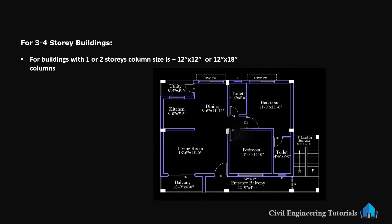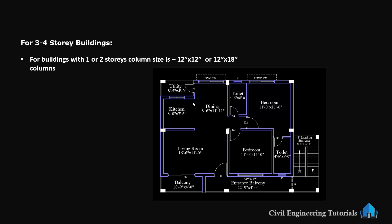You can see this is a 3 storey building plan. Let's consider a 4 storey building — the load of each floor will be transferred down to the columns, so we need columns that can handle much more weight. A 12 inch by 12 inch column is ideal for such a building, though here in this example it is 12 inch by 15 inch. These columns are thicker and stronger, preventing any bending or shifting over time.